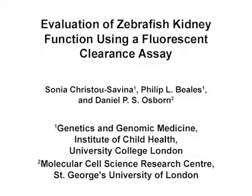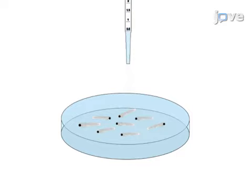The overall goal of this procedure is to generate a quantitative kidney function assay in zebrafish. This is accomplished by first anesthetizing zebrafish embryos at 72 HPF.